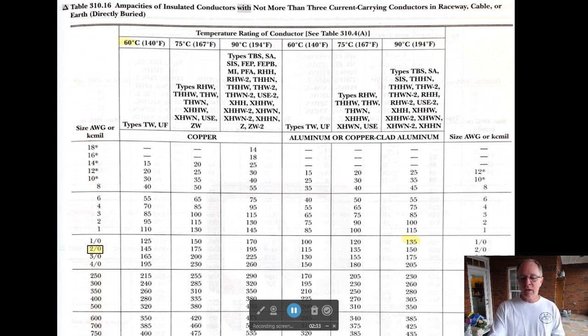We've got to find THHN. If you look in the 90 degree Celsius column, it is there. So now we see it's 195 amps—that's what the 2-Aught will carry. This is what you do on every wire. If you're looking for 6-THW, you'll go to 6, find THW, which is in the middle column, and it's 65 amps.